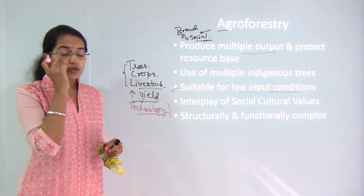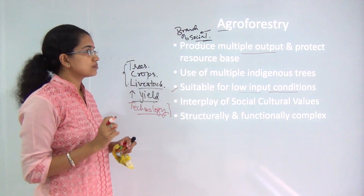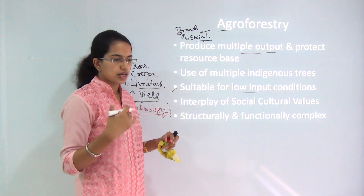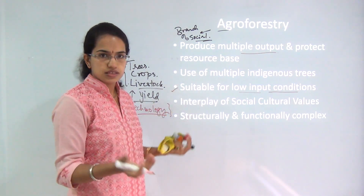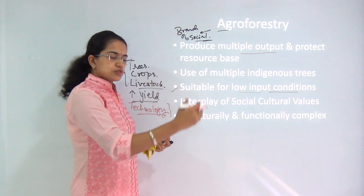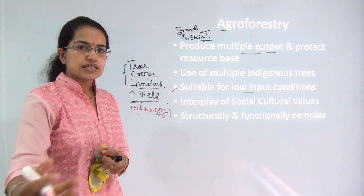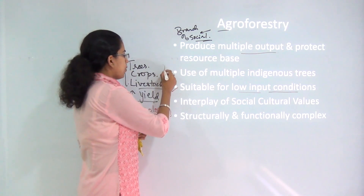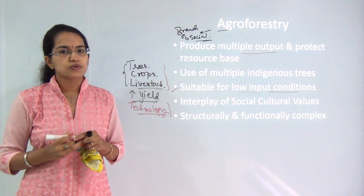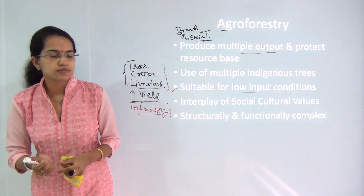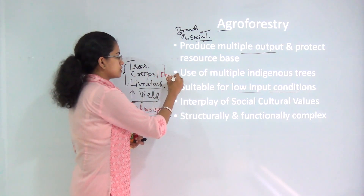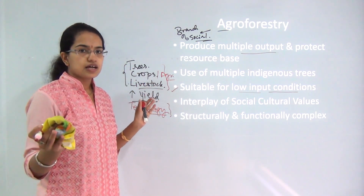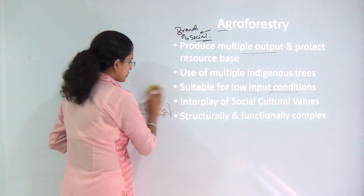Agroforestry is a much more complex phenomenon. It is structurally and functionally much more complex than any other form of forestry. General agricultural production is definitely not that structurally complex, because you just need to develop the technology and give a basic idea of how crops must be grown. But when you are trying to grow trees, agricultural produce, and livestock all in one ambit, you need a big resource space and you need to protect that resource space.